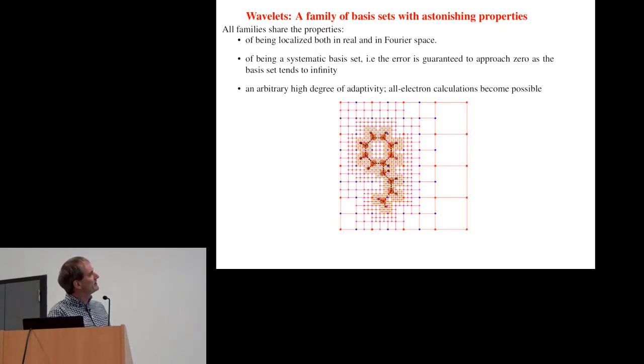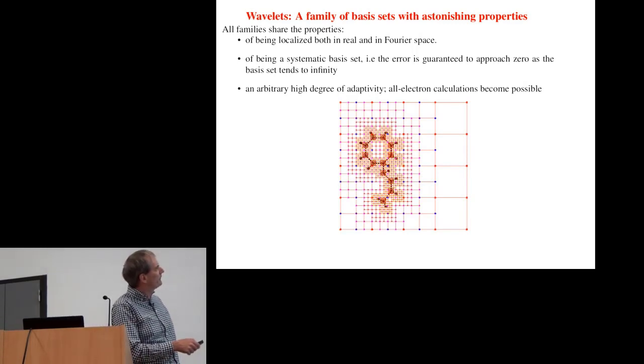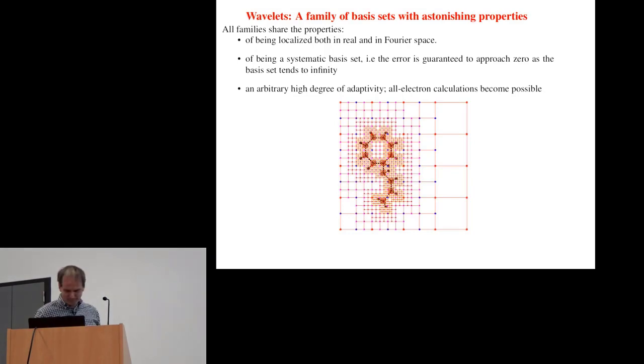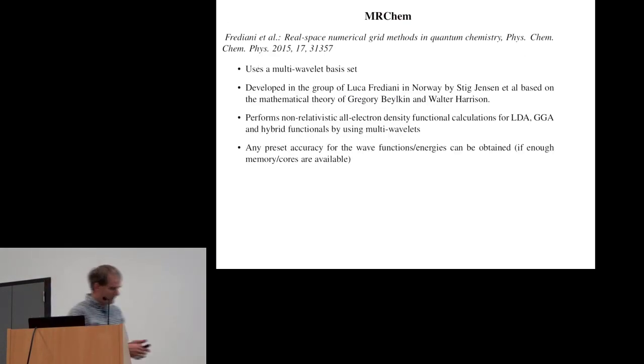What is very important if you want to do all-electron calculations is that you can have adaptivity. Here you can recognize some small organic molecule with some benzene ring. This figure gives you an indication of the resolution that can be obtained in such a wavelet basis. As you come closer to the nucleus, you can increase the resolution to any arbitrary high level that you need.